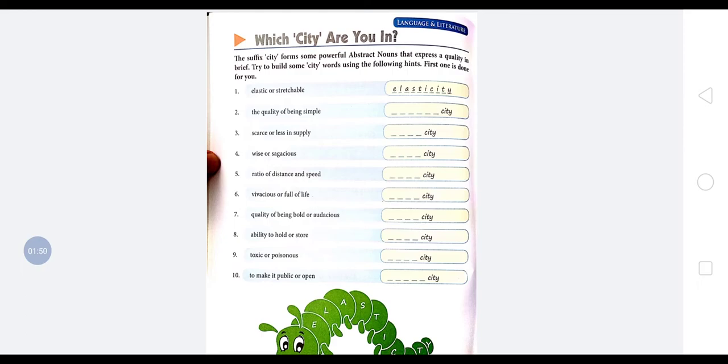Fifth is ratio of distance and speed. You must have studied in science beta - ratio of distance and speed, it is known as velocity. Then sixth is vivacious, or meaning of vivacious that has been told here, full of life. We will see, it will be known as vivacity, okay?